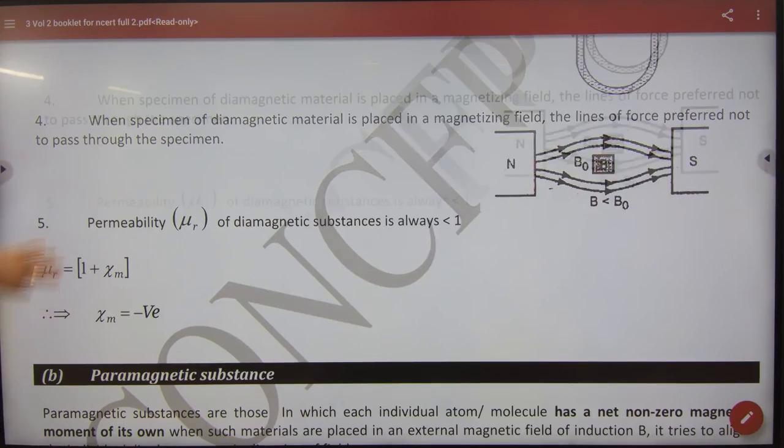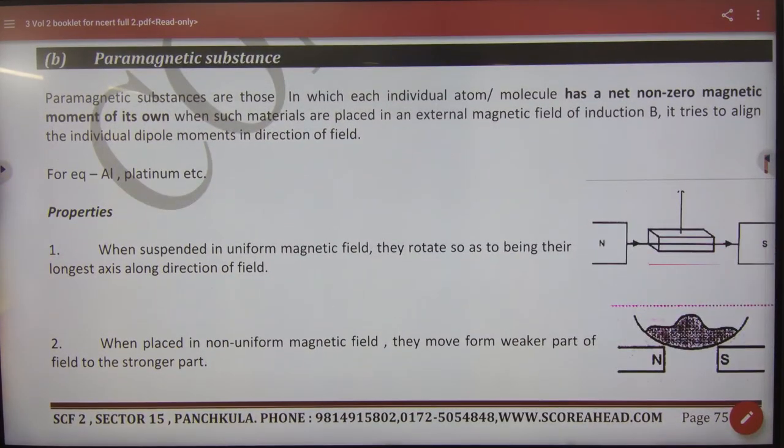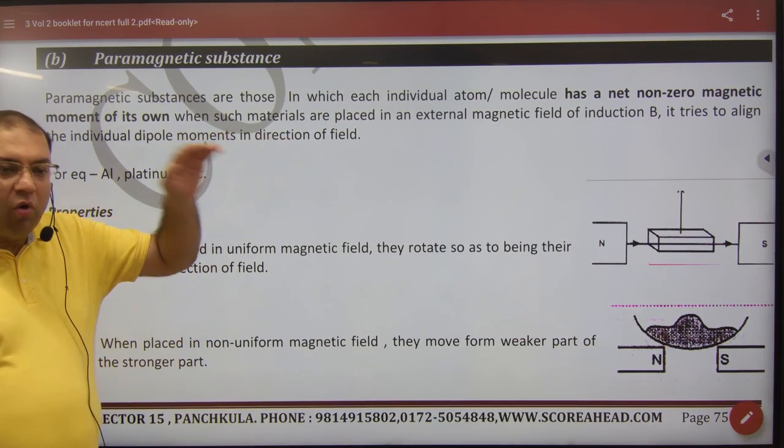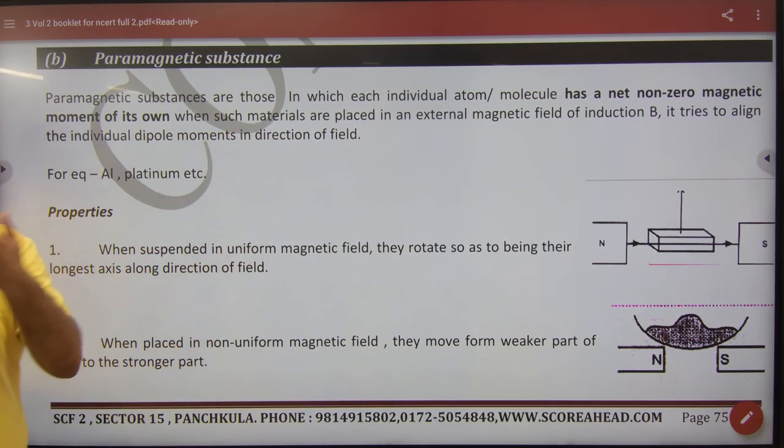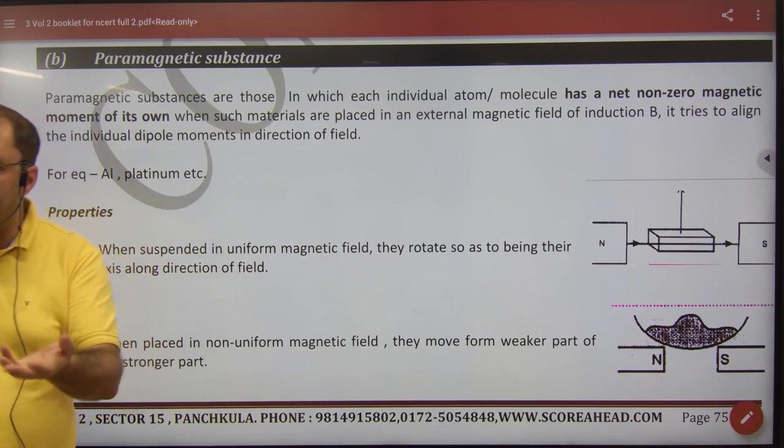Next is the properties of para and ferro materials. What are para or ferro materials? They have a non-zero magnetic dipole moment because the atoms or molecules act like a magnet. By nature, it is a magnet.